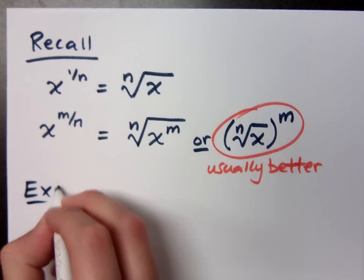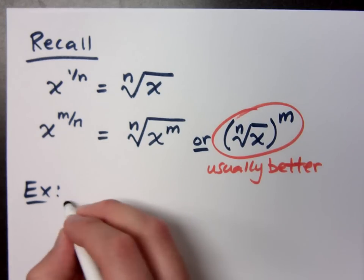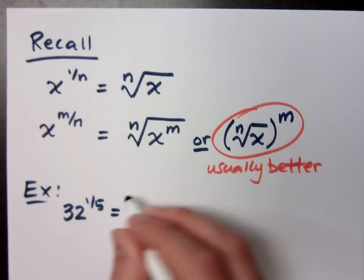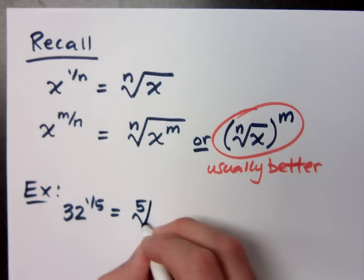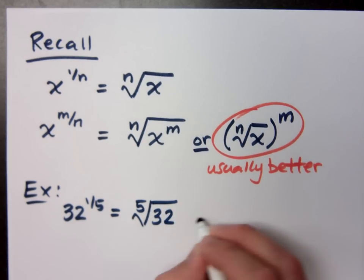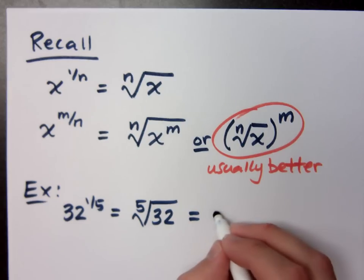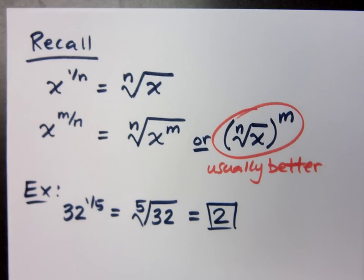Here's what I mean by that. Now the example that we saw earlier today was, we had 32 to the 1 5th power, which meant the 5th root of 32. That's how we got meaning for that, and we said that the 5th root of 32 was 2. No big deal.